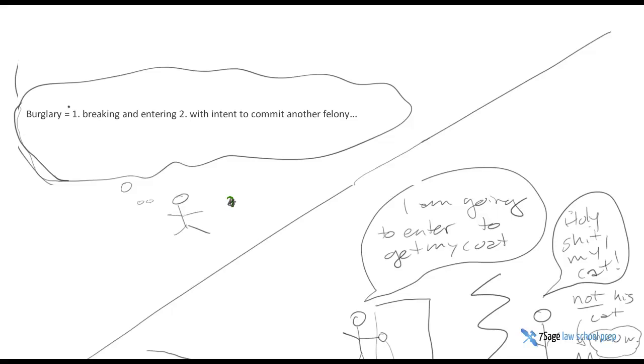So here's a question. Let's say you're trying to understand burglary. Are you better equipped doing it this way where somebody tells you what the elements of burglary are, which is breaking and entering a dwelling with the intent to commit another felony? I made this a bit shorter. And then seeing a fact pattern where this takes place.